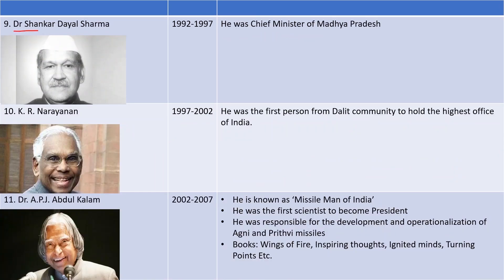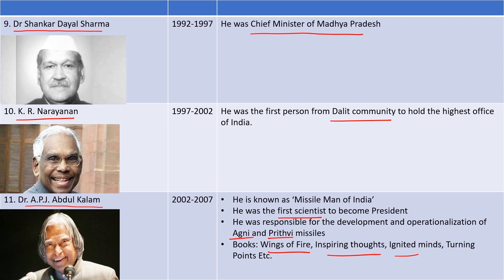Dr. Shankar Dayal Sharma served as President and was previously Madhya Pradesh Chief Minister. K. R. Narayanan was the first President from the Dalit community. Dr. A. P. J. Abdul Kalam was the first scientist-president, known for his major role in India's missile program. His important books include Wings of Fire, Inspiring Thoughts, Ignited Minds, and Turning Points.